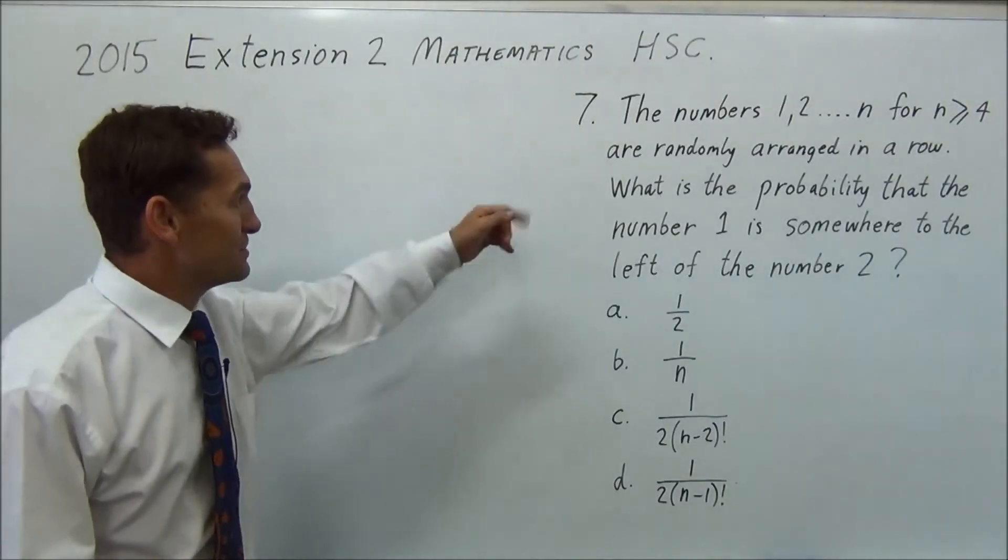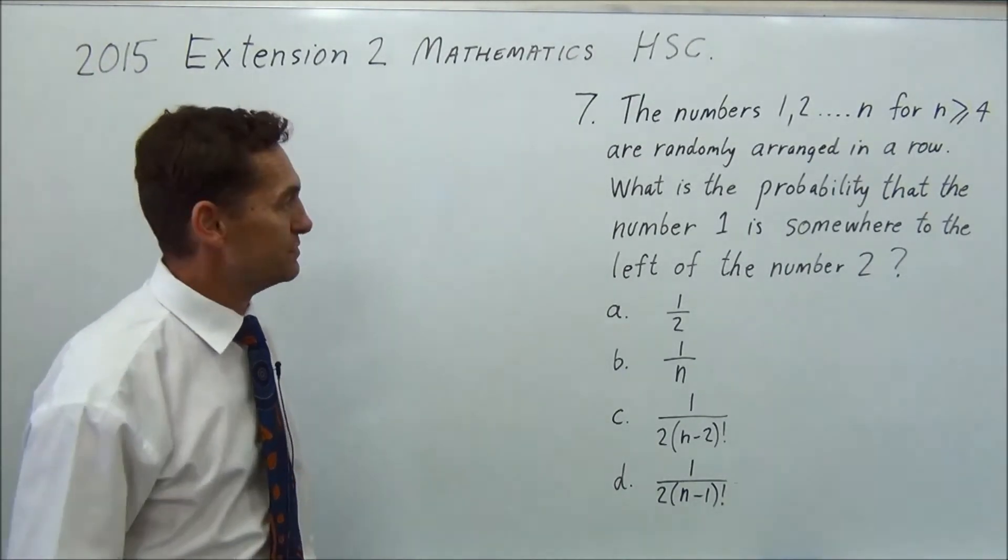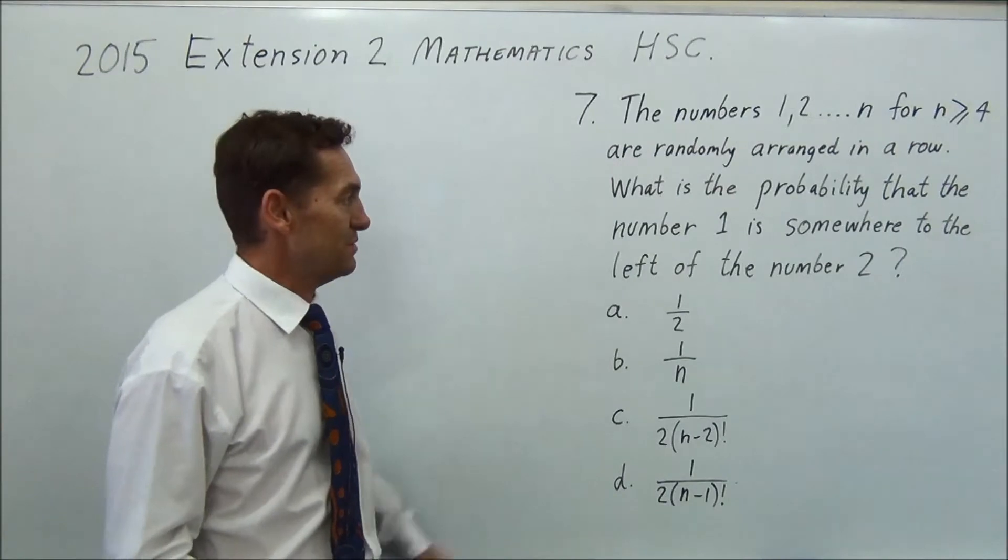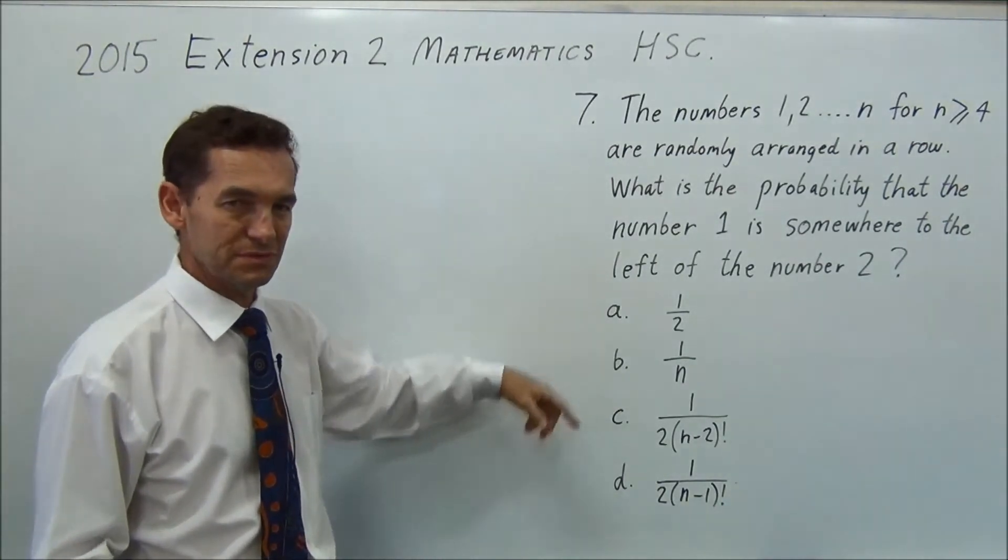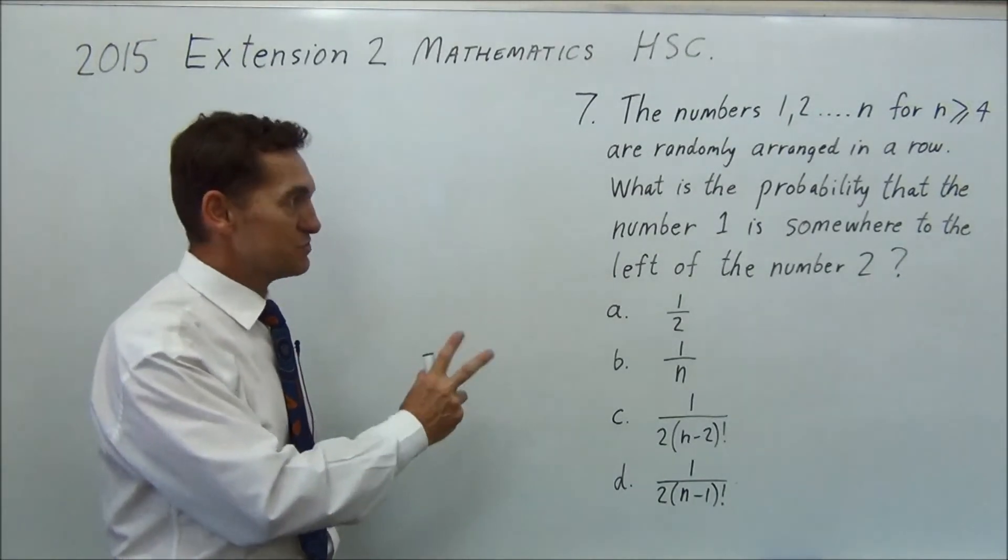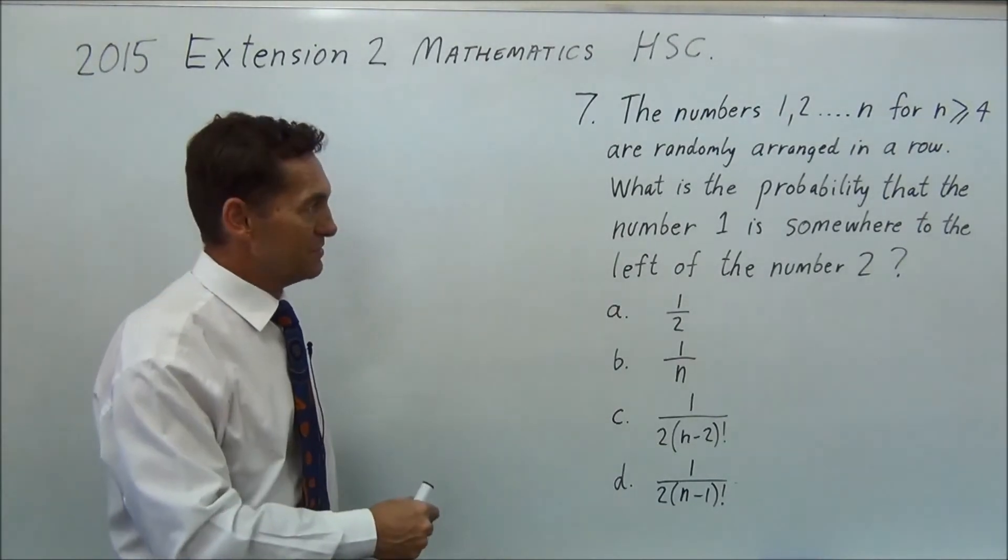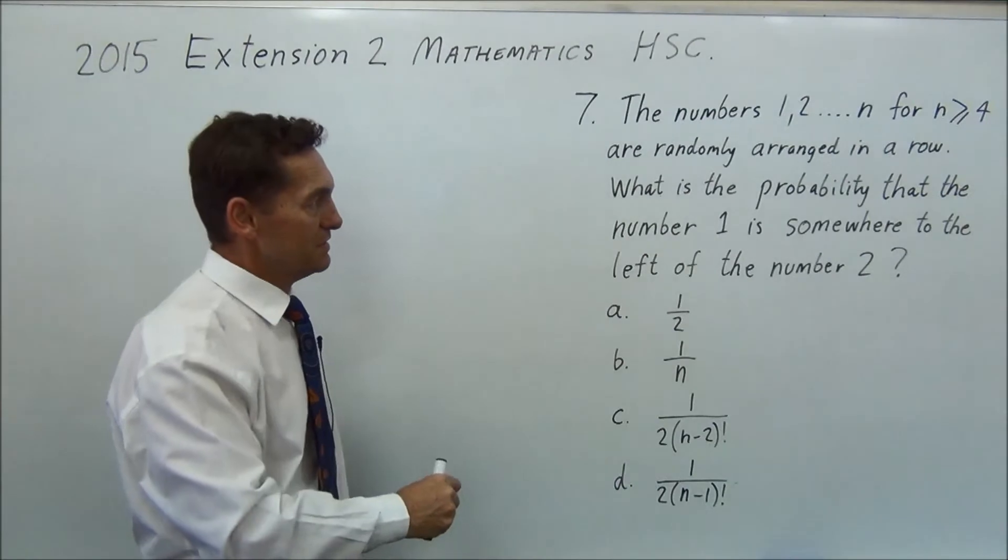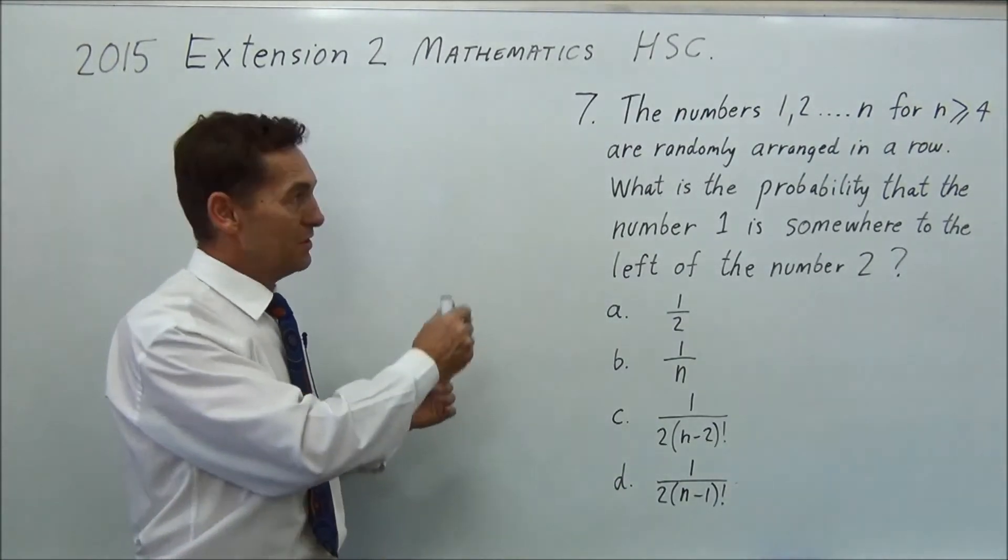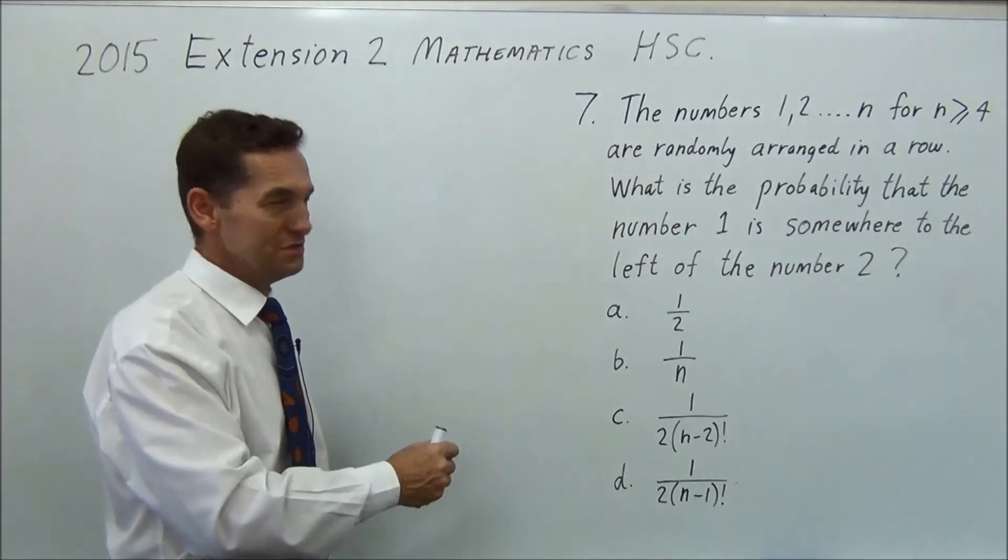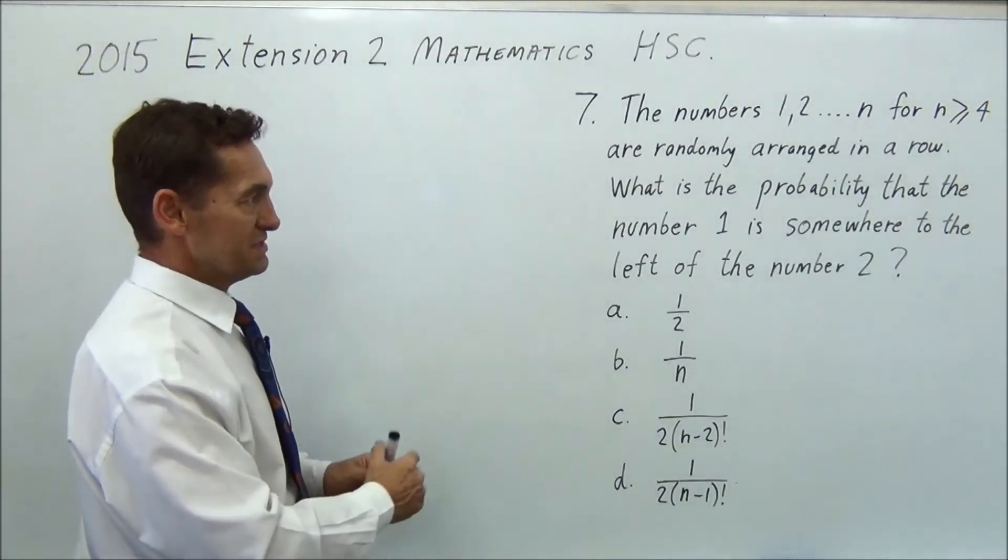G'day again. Question 7. The numbers 1, 2 up to n for n greater than or equal to 4 are randomly arranged in a row. What is the probability that the number 1 is somewhere to the left of the number 2? This would have to be one of the strangest questions they've thrown in there because there's no real formula that I can think of that you would do, that you would tend to use for this. It's really just a plain thinking question.